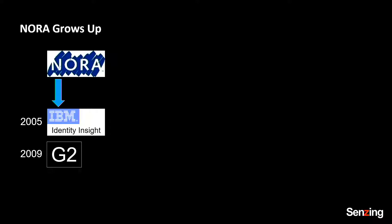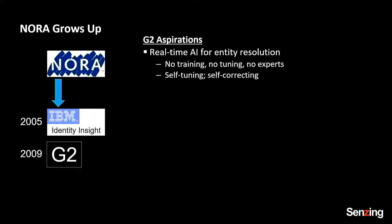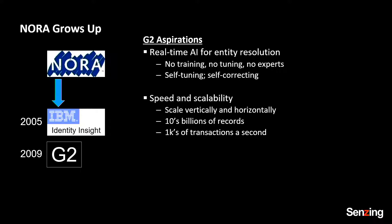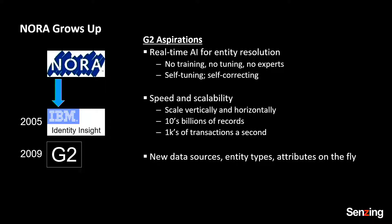I stayed at IBM for 11 and a half years — the longest CEO founder to ever stay. Four years in, I dreamt up this idea. I decided to codename it G2, and I went and pitched leadership at IBM. I said I want to build software to do entity resolution that does it in real time, no training, no tuning, no experts, self-tuning, self-correcting, vertically and horizontally scalable. You can feed it billions of records and then do thousands of transactions a second. You can add new data sources, new types of entities, new types of attributes while a plane's in the air, and bake more privacy features in than any analytics in this class that I've ever worked on.